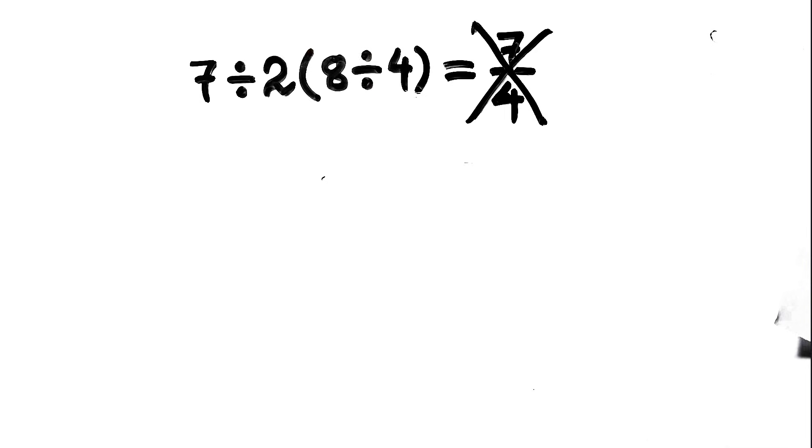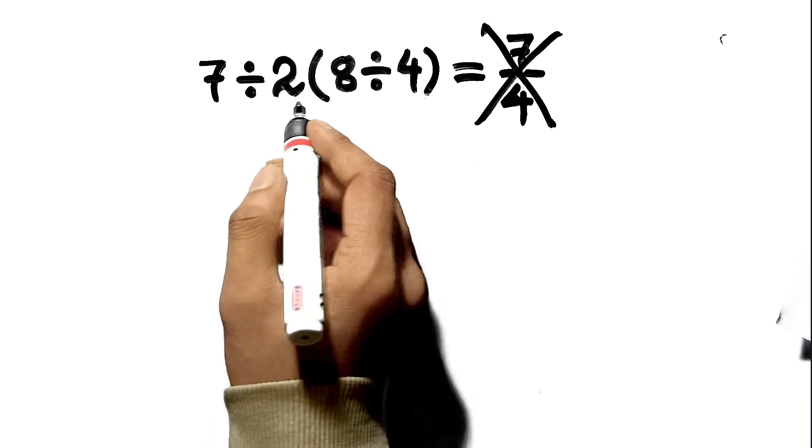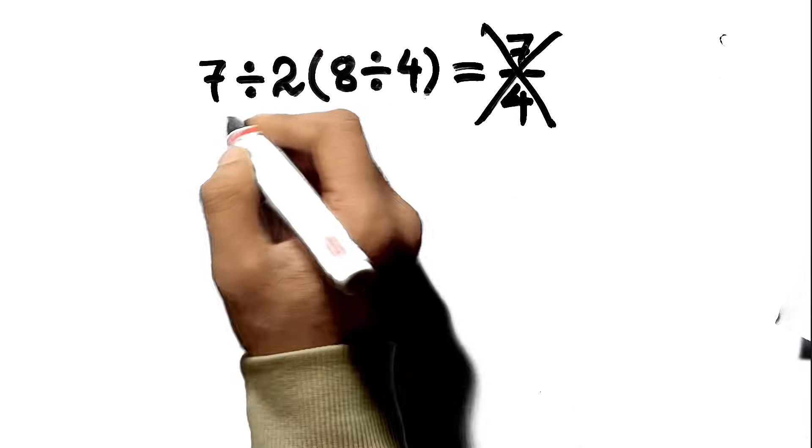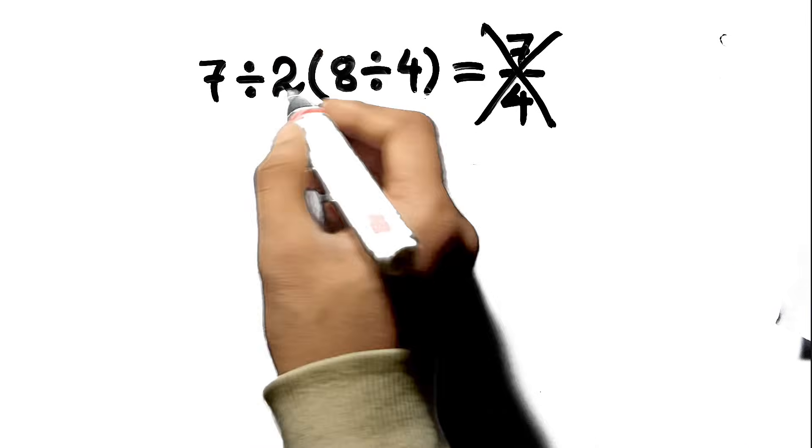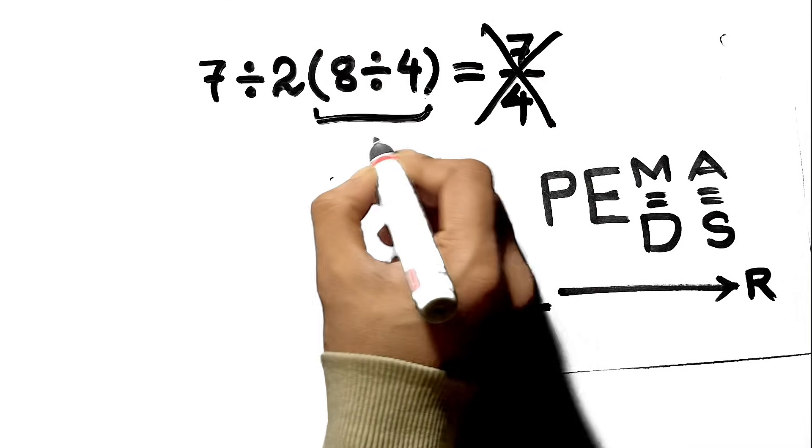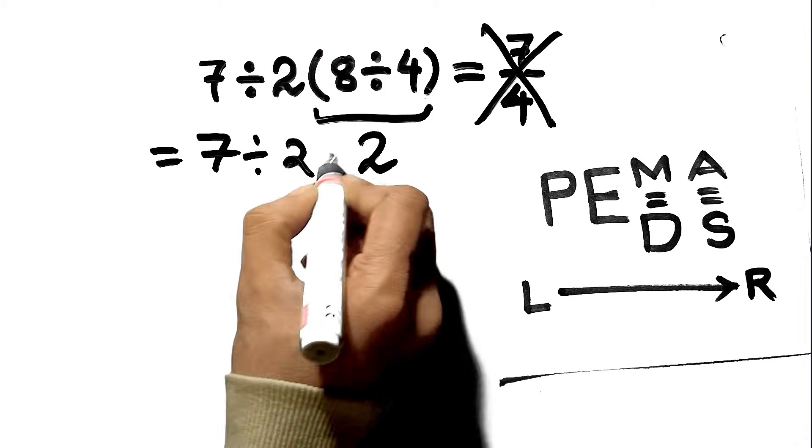Alright, let's do this correctly. Look at the expression carefully. 7 divided by 2 times parentheses 8 divided by 4. Step 1, parentheses. Inside, we have 8 divided by 4, which is 2. So now the expression becomes 7 divided by 2 times 2.